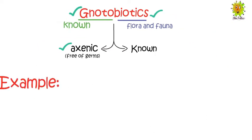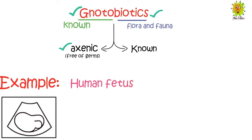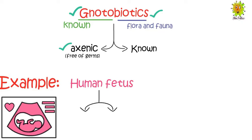A key example of a notobiotic is the human fetus. The human fetus present in the uterus is normally germ-free, so you can call it axenic. Since there is no microbiota in the fetus, you can also call it notobiotic.